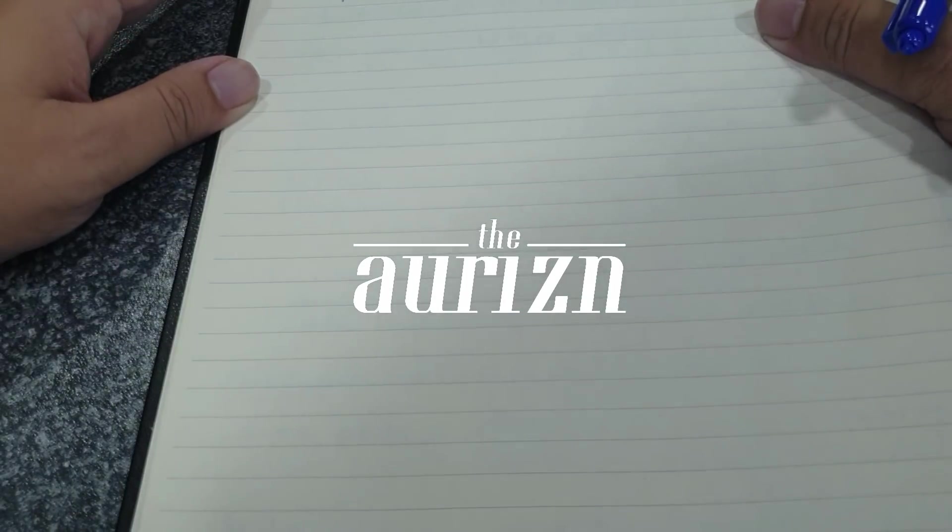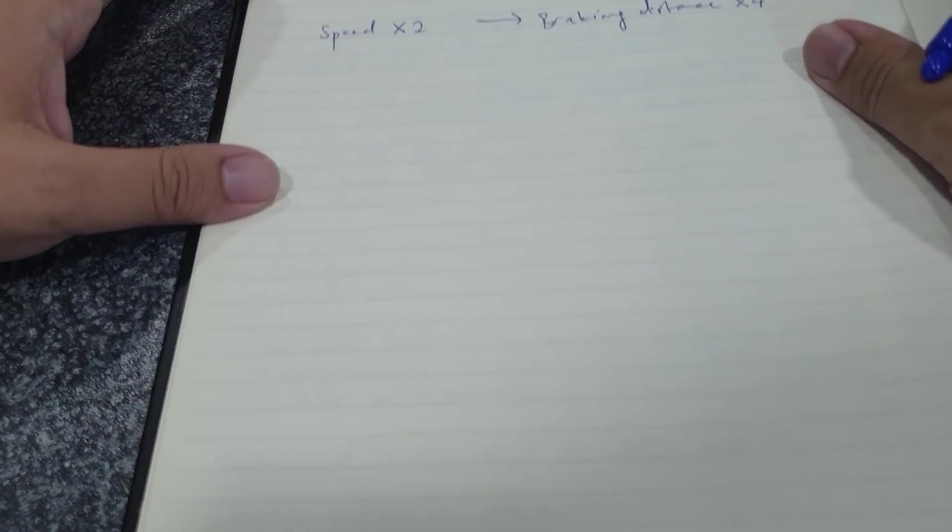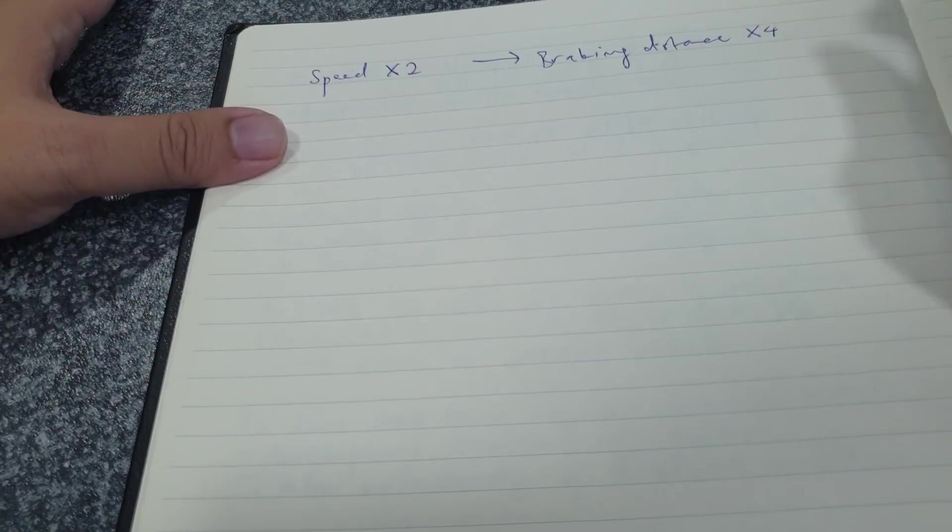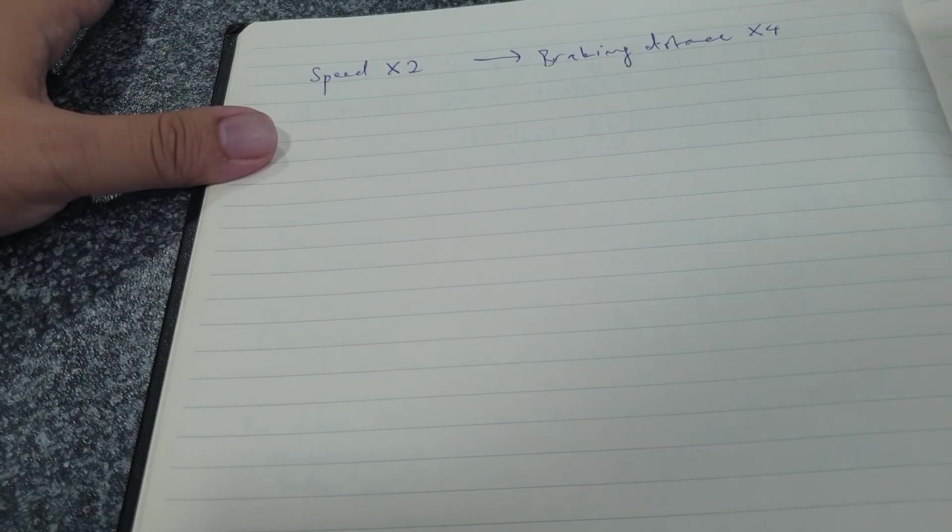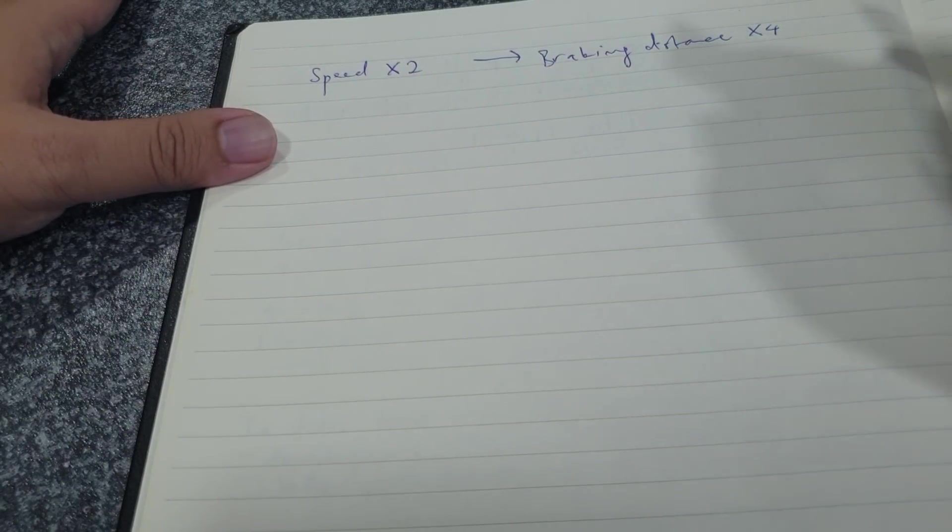Hi guys. Today I'm trading the steering wheel for a pen and notebook. In this video, I'm going to explain why whenever you double your speed, the braking distance of your car increases by a factor of four. This relationship holds true for any car, regardless of what tires you're using and how much you've upgraded your braking system.